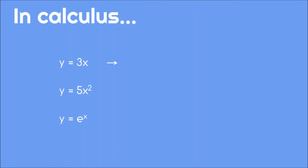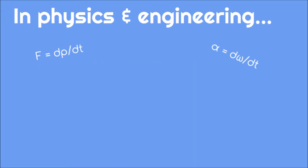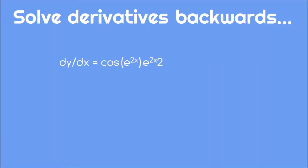In Calculus 1, you learn how to take derivatives. With just a few simple rules, you can take the derivative of any function you come across. This is an important skill to learn because physics and engineering are full of derivatives. The challenge, though, is that you often have to solve derivatives backwards — meaning that physics gives you the derivative and asks you to find the original function.